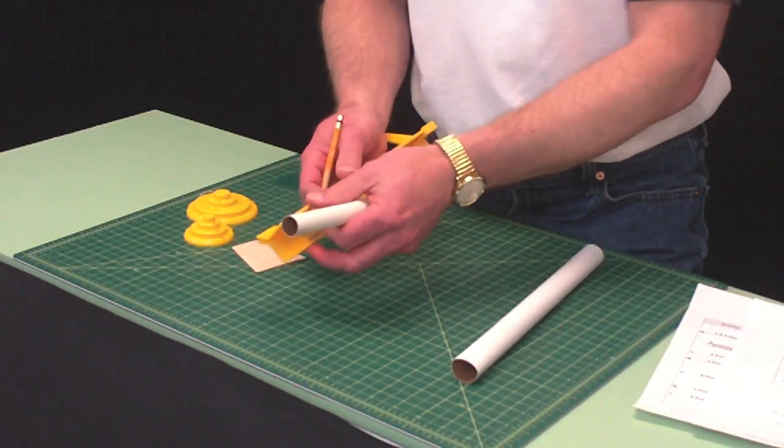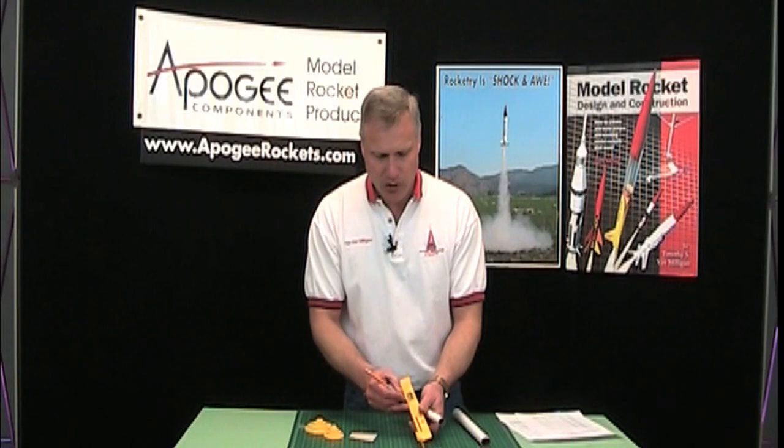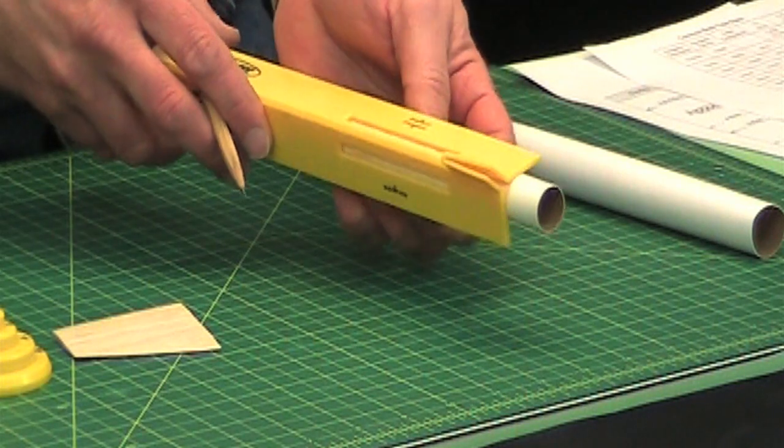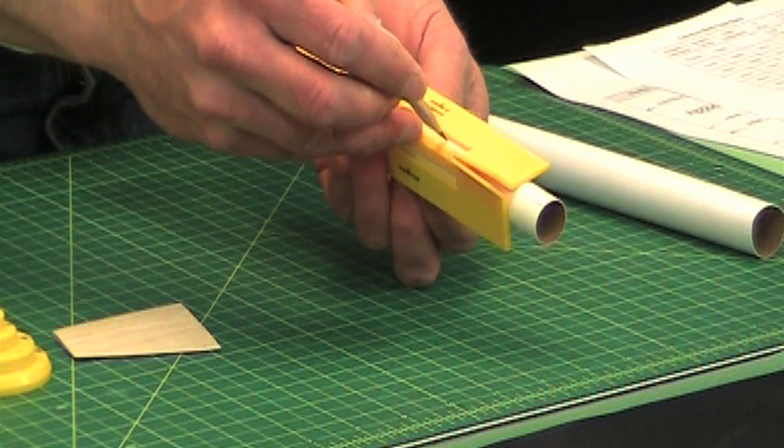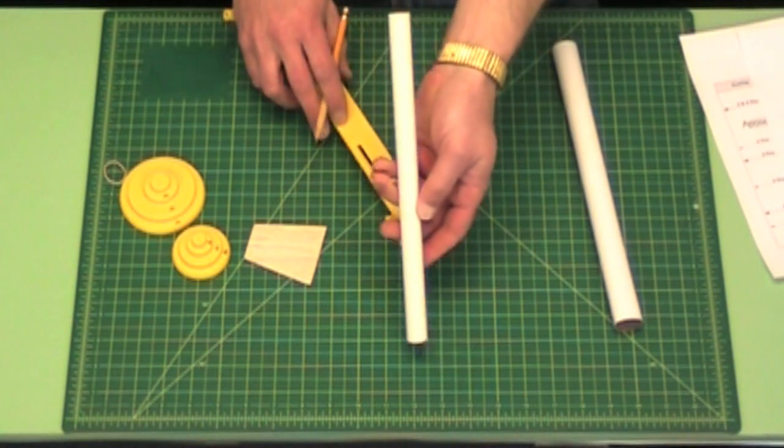Ideally this little slot should go a little bit longer, it doesn't, but you can just reposition and then continue drawing the line up the tube if you need a longer line.